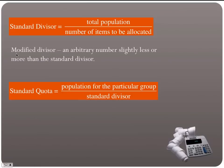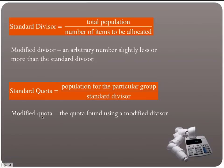Sometimes you might need to use a modified divisor — an arbitrary number, meaning you get to pick it, that is slightly less or more than the standard divisor. You can find your standard divisor and go just a little bit above or below to get a modified divisor. Using a modified divisor, you can find a modified quota by taking the group's population and dividing it by the modified divisor.